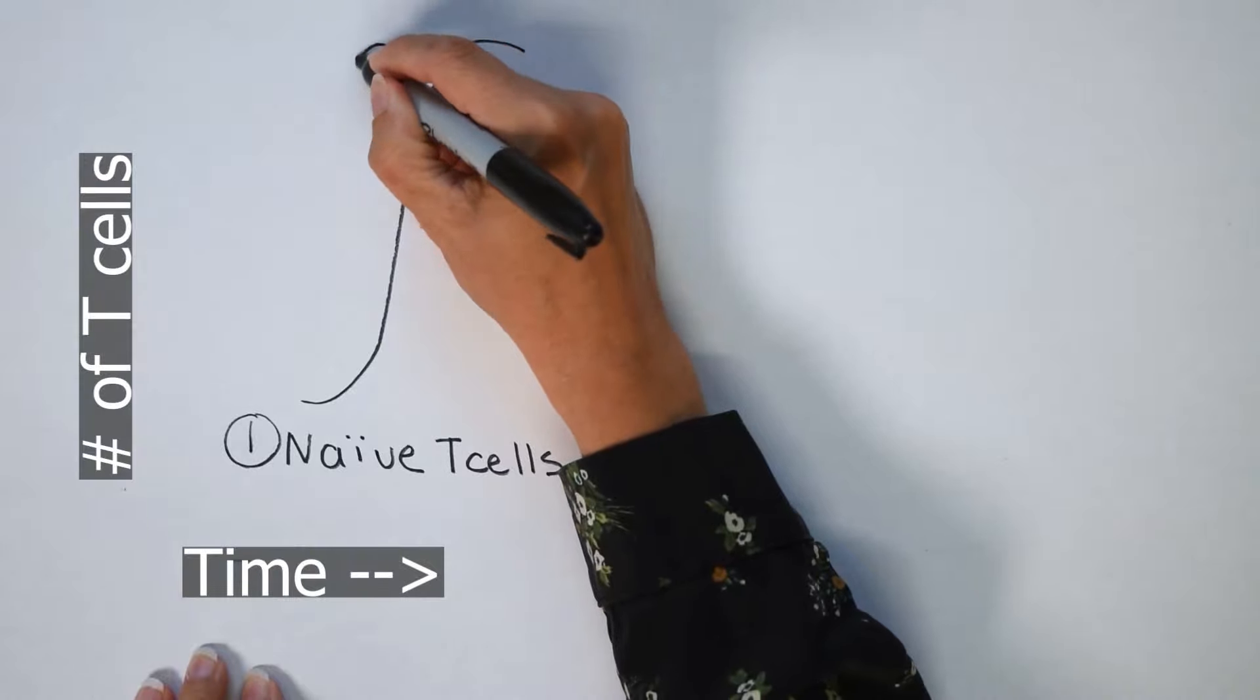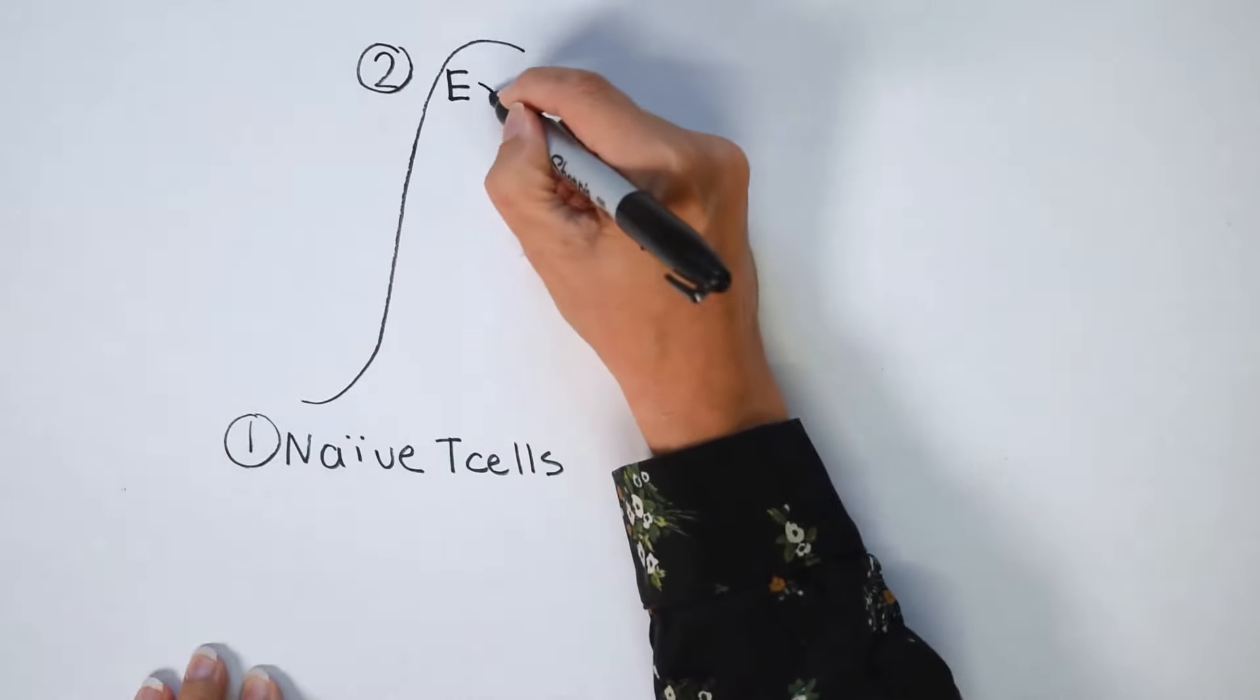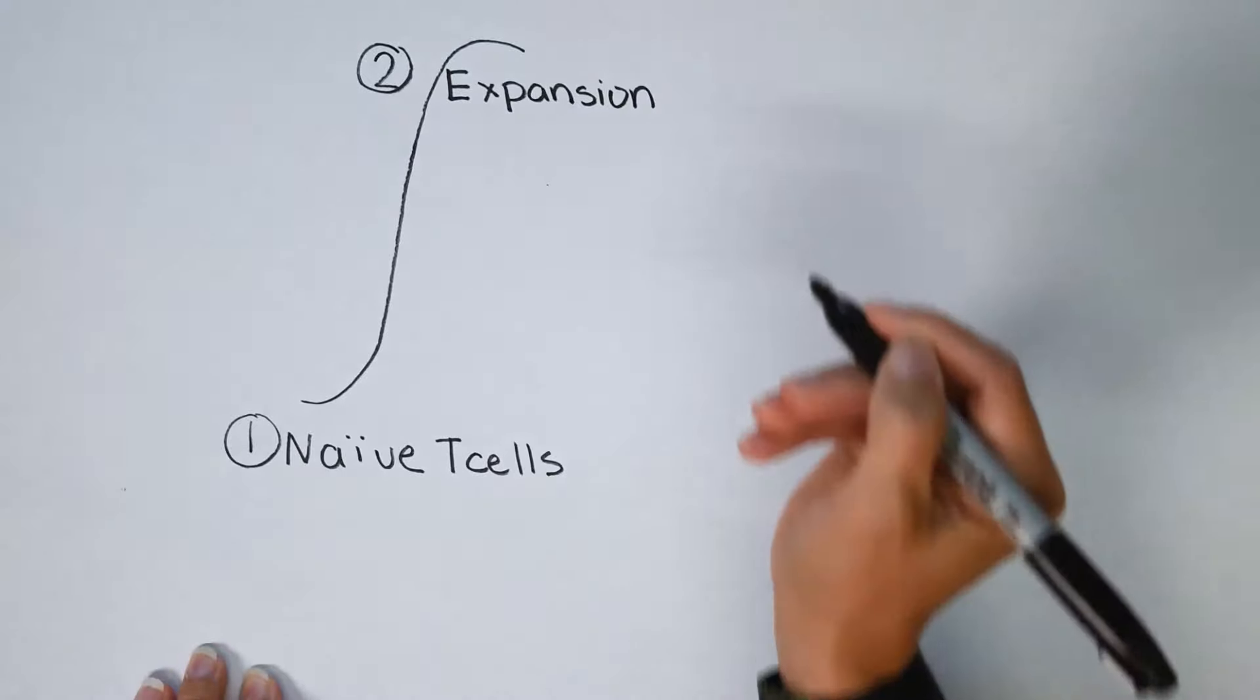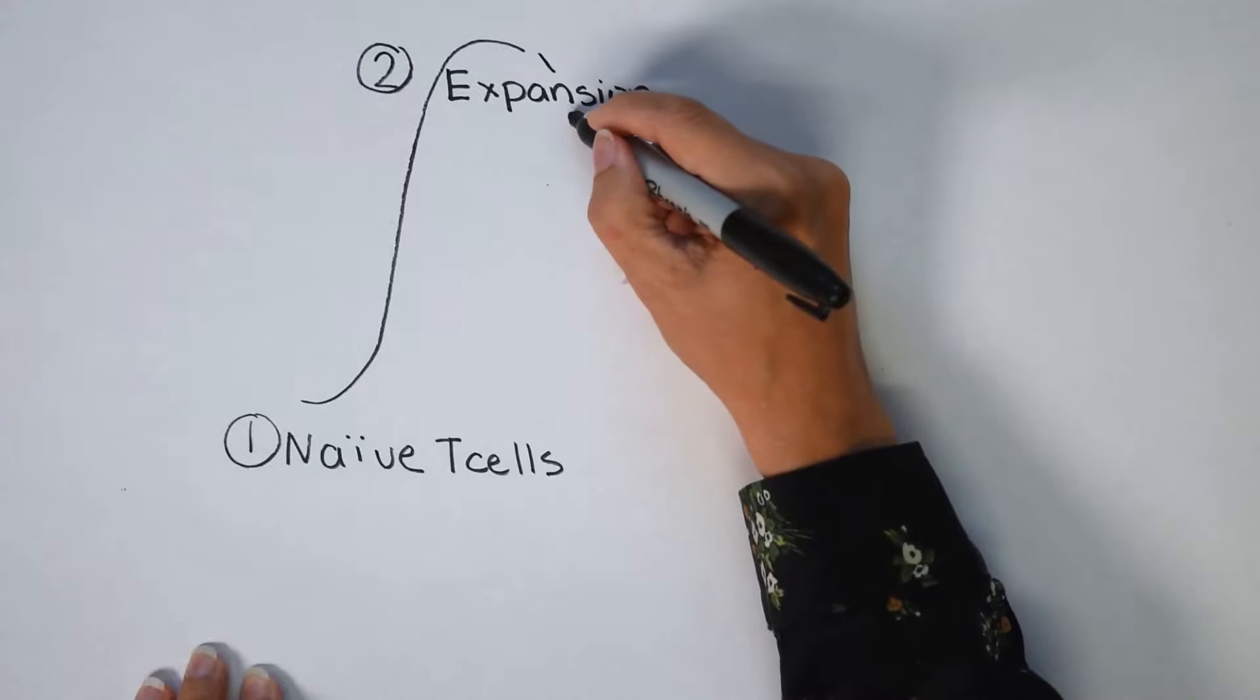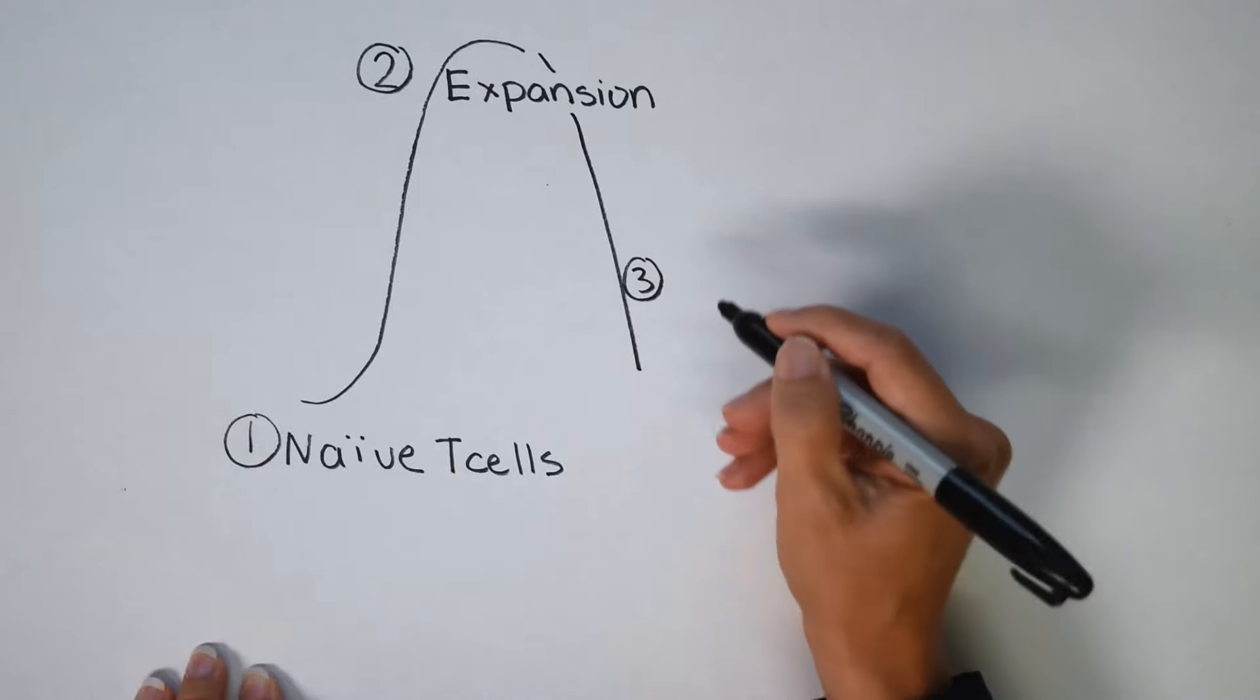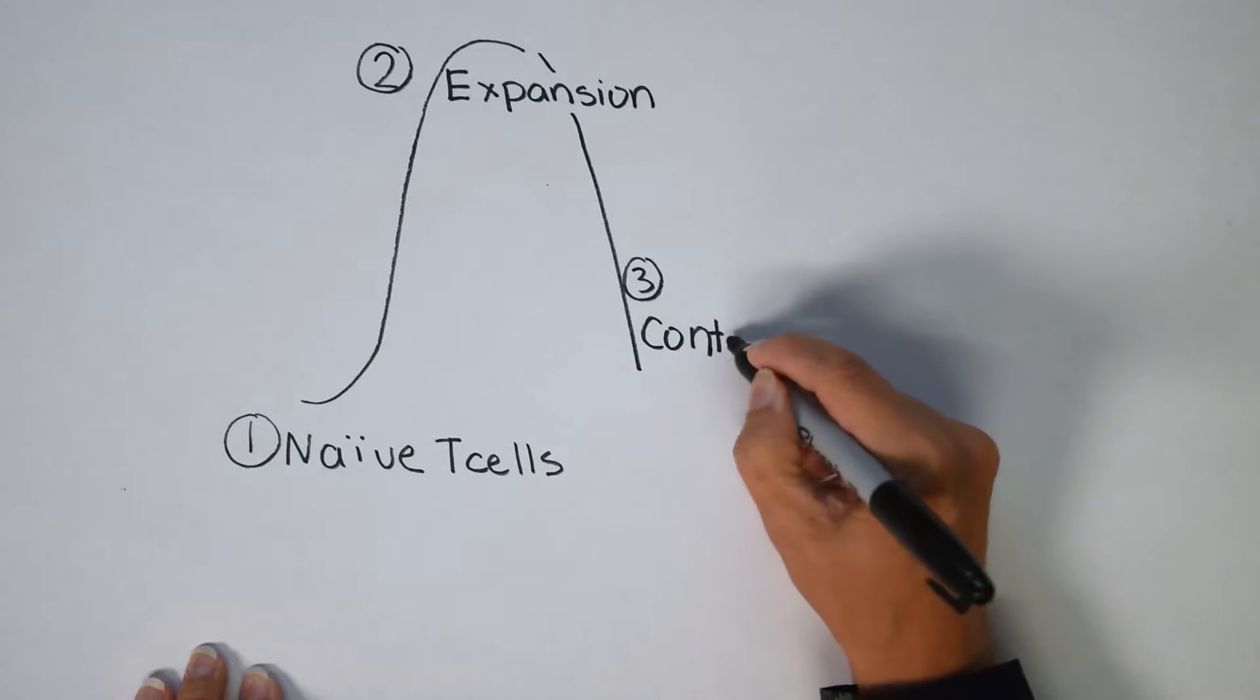Now when it finds its match, like I showed you previously with the macrophage, it takes about one to three days to do something called expansion. Expansion basically takes one T cell and could turn it into potentially 10 million T cells. That's incredible. That's why if you've ever had a cold and you've touched your lymph nodes, they were swollen and sort of hurt because one of your cells made practically 10 million copies of itself.